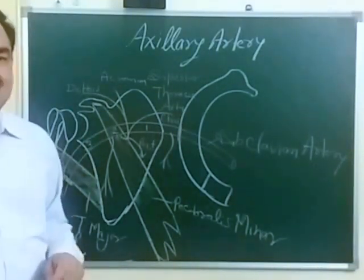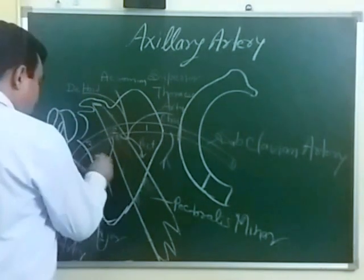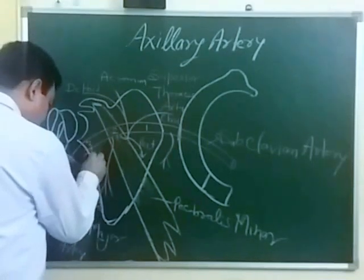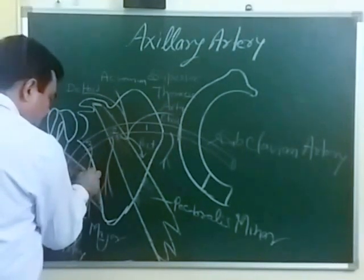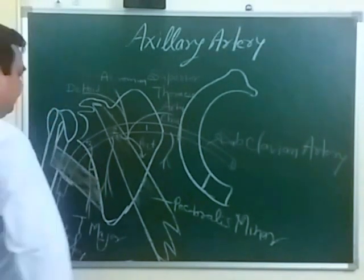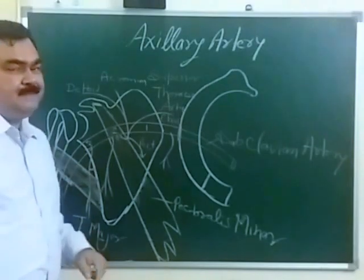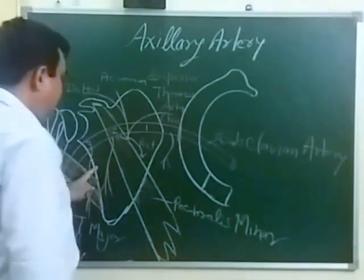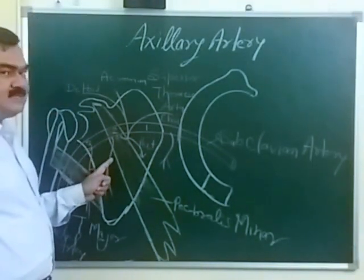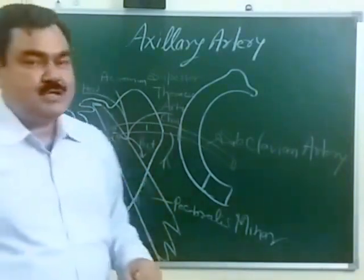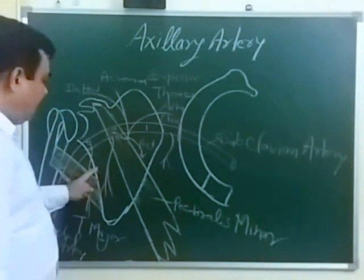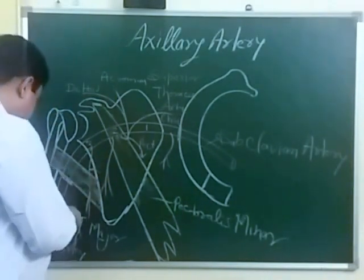The third part of the axillary artery gives three branches. The first branch is the subscapular artery. This subscapular artery gives a branch — the circumflex scapular artery — which passes toward the medial side between the teres major muscles and gives supply to the dorsal aspect of the scapula, including the infraspinous fossa, and anteriorly to the subscapular and related muscles.